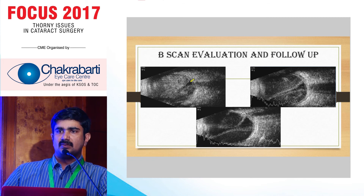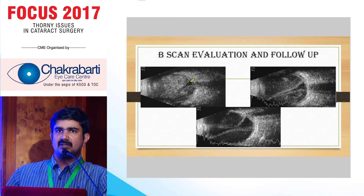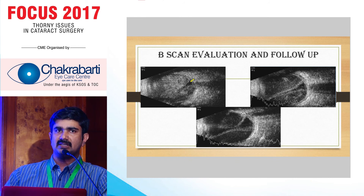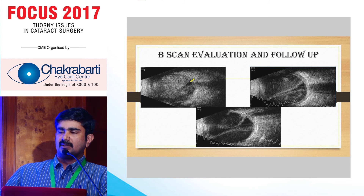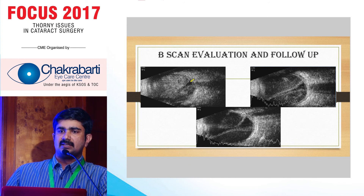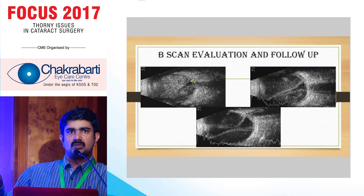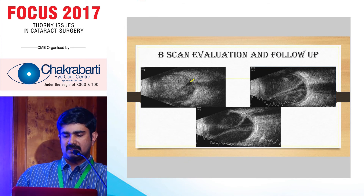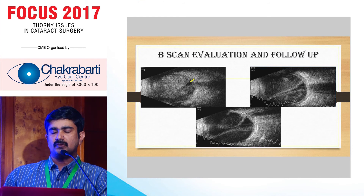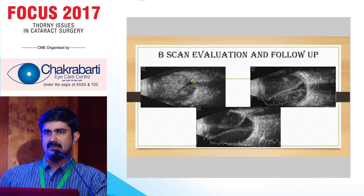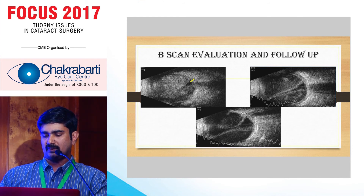On sequential B-scan, you see the clot starting to liquefy — the choroid appears better seen and the suprachoroidal space becomes less and less echogenic. Once it becomes totally echolucent and appears like a serous retinal detachment, that indicates complete liquefaction, which is the ideal time to plan drainage of the suprachoroidal hemorrhage.